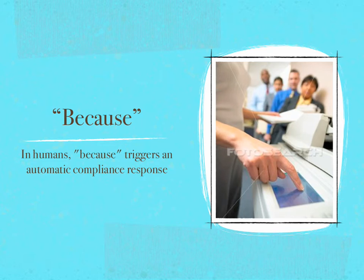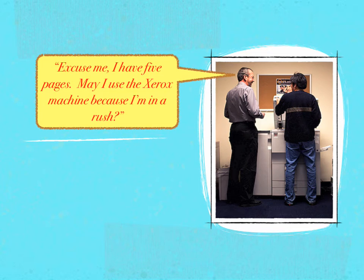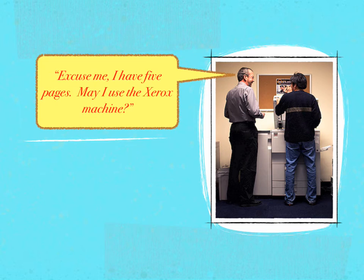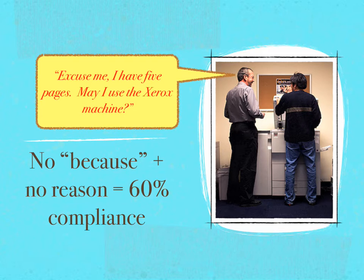First, someone requested: "Excuse me, I have five pages — may I use the Xerox machine because I'm in a rush?" Because plus a good reason resulted in 94% compliance. Second, when one requested: "Excuse me, I have five pages — may I use the Xerox machine?" — with no because and no reason — only 60% complied. What was the reason for that 34% difference?